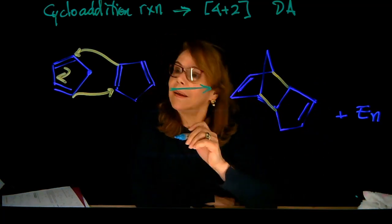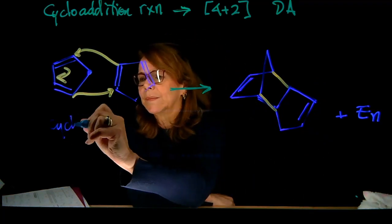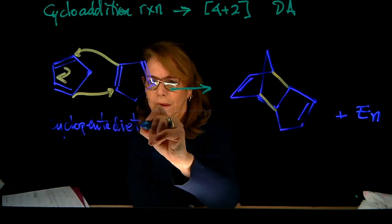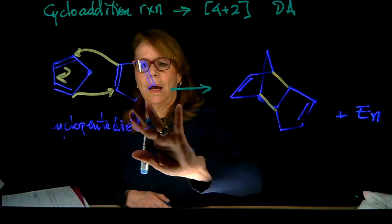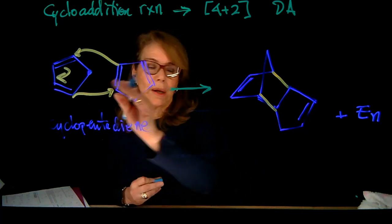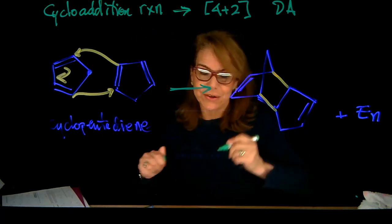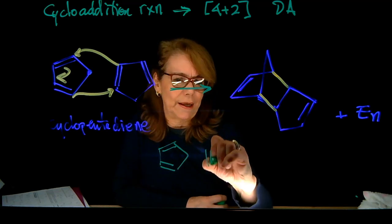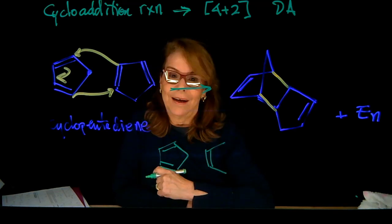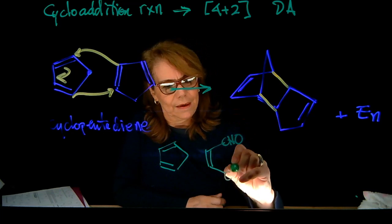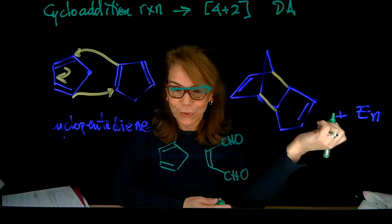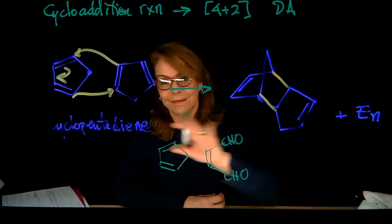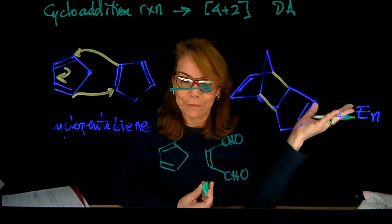Now, it's so reactive, cyclopentadiene, that this dimerization happens. If we wanted to use cyclopentadiene in another reaction - say that I wanted to add it to this dienophile - well, when I'm going to do that in the lab, typically what we have to do is crack the dimer, because most often this dimerizes easily.